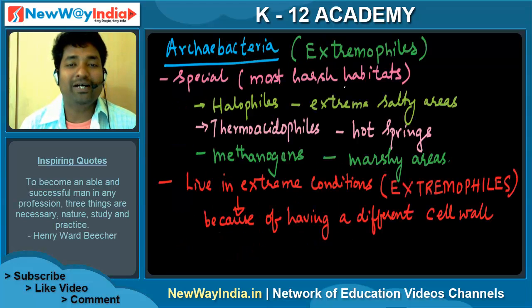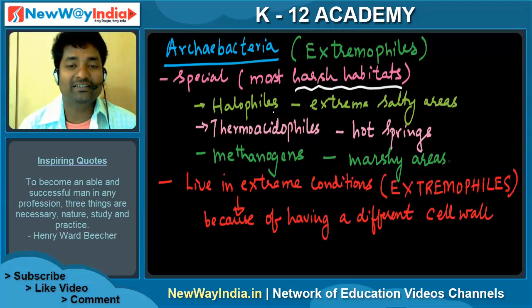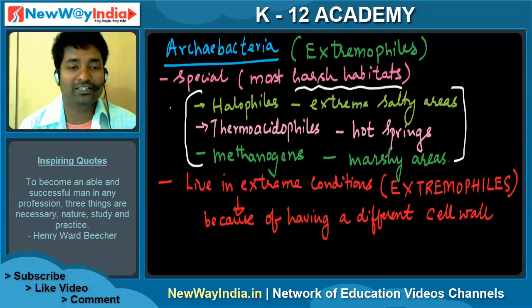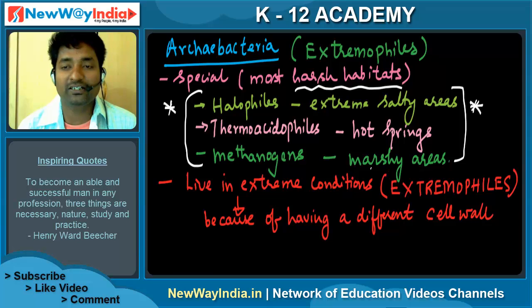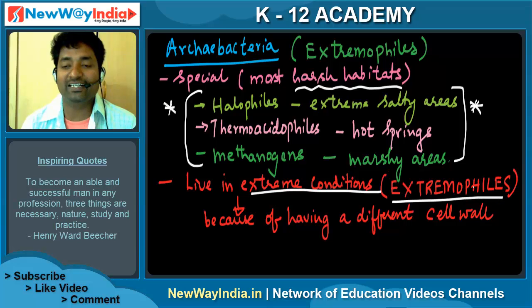Archaebacteria are extremophiles — these are special types because they live in the most harsh habitats. Based on their living conditions, they are called halophiles, which live in extremely salty areas; thermoacidophiles, which live in hot springs; and methanogens, which live in marshy areas. This is definitely something we need to remember for examination purposes, both competitive exams and public exams. They live in extreme conditions, that's why they are called extremophiles.